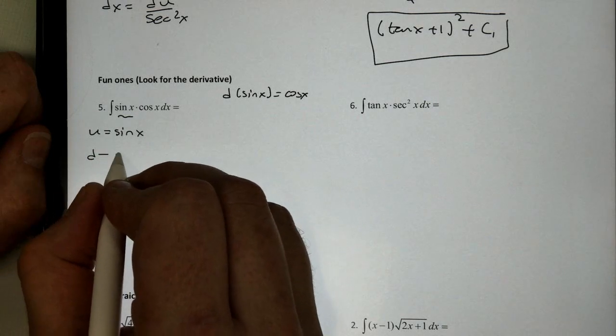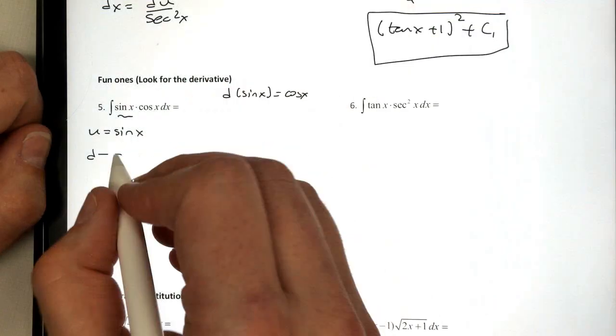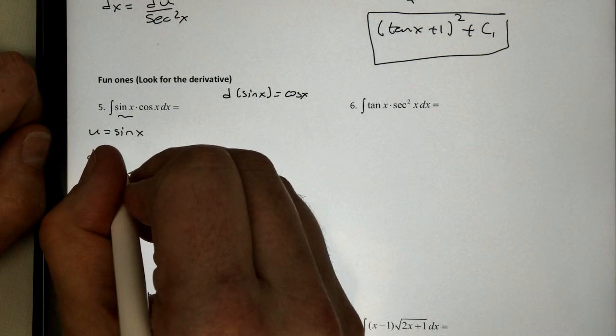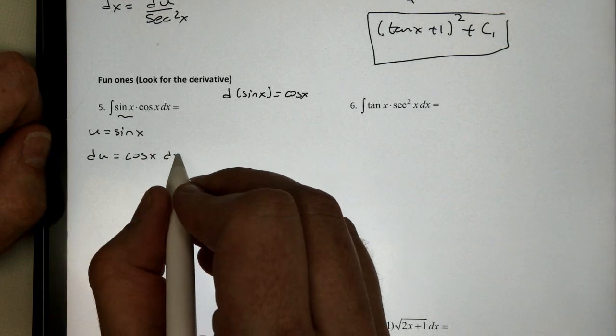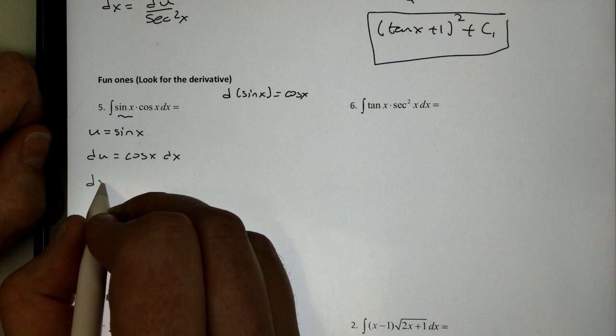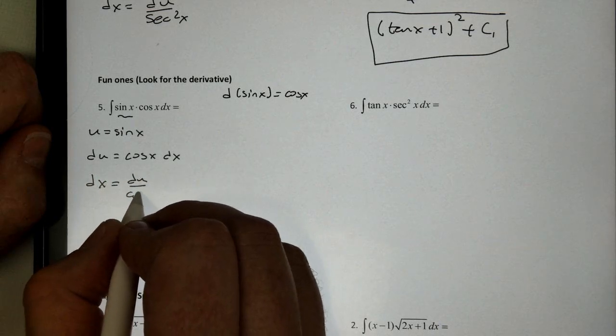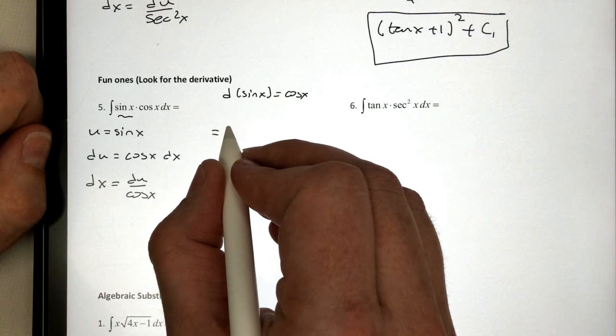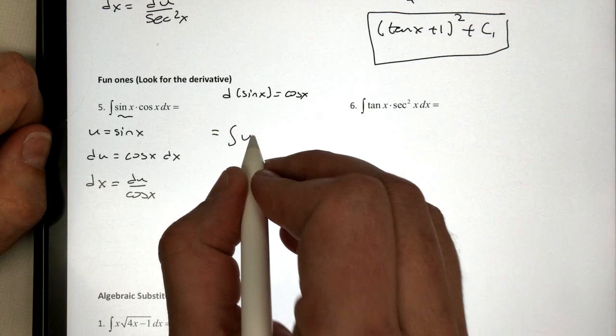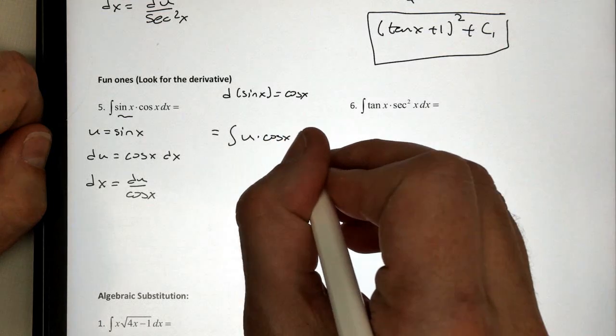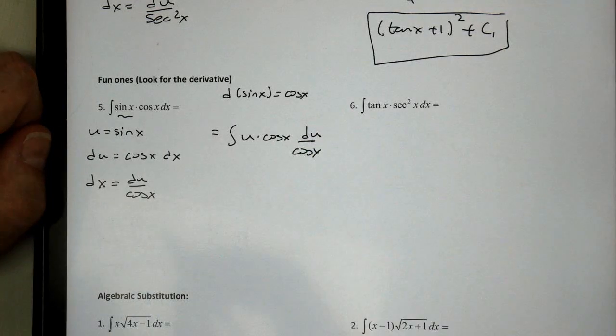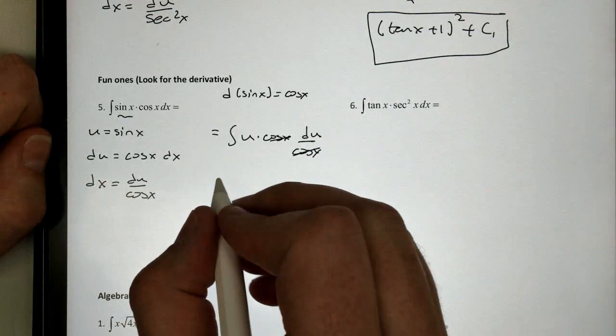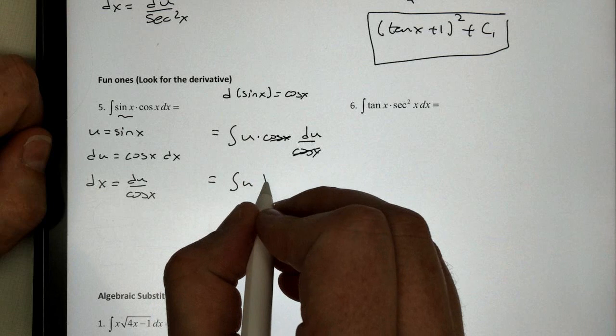Its derivative will be cosine of x. And don't forget, this is really du over dx times dx. So we multiply by the dx's. So we would get dx equals du over cosine of x. So let's see what happens when we replace. We would get u times the cosine of x. dx becomes du over cosine of x. Now, if you notice, the cosines will cancel out. And all we're left with is u. And that's exactly what we want.